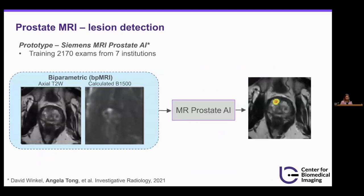We have access to a prototype lesion detection tool for prostate MRI, developed and evaluated by our colleagues at Siemens and team member Angela Tong. It was trained on 2,170 exams from seven institutions, including our own. The input to the model is biparametric MRI — the axial T2-weighted image and the calculated B1500. The output is a heat map of the lesion on the image.